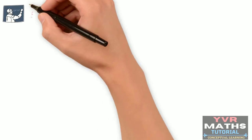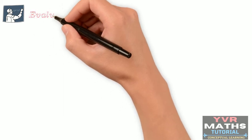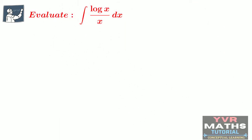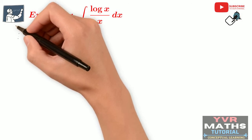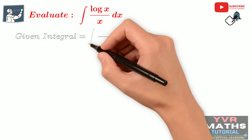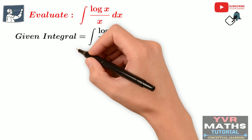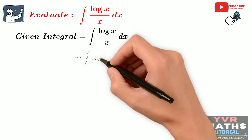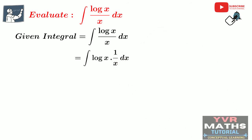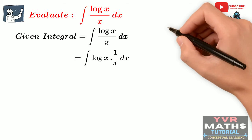Let us discuss one more problem. Evaluate integral of log x by x dx. Given integral is equal to integral of log x by x dx. In the given integrand we have two terms log x and 1 by x. So I am going to separate log x from the numerator and the remaining term 1 by x separately, giving us integral of log x into 1 by x dx. Now substitute some part of the integrand as another variable. The derivative of the function log x is 1 by x. That's why I am considering log x as a new variable t.